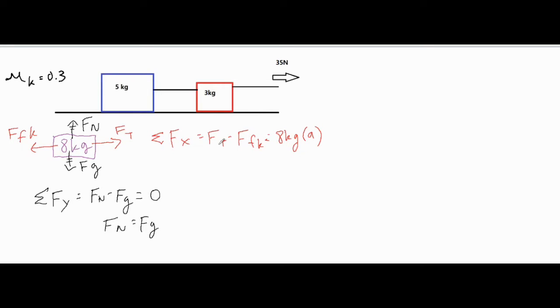In the x direction, we have the force of tension, which is this 35 newton force to the right, and we have the force of friction opposing that slide, and that equals the mass times acceleration. But since we're looking at both objects as one big system, we have eight kilograms in total with some kind of acceleration. We do know the force of tension is 35 newtons.